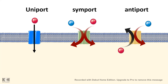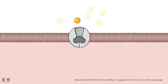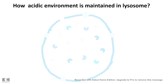For uniport, consider the example of red blood cells (RBCs). RBCs need to be metabolically active and require glucose to enter the cell. This happens via GLUT1, a transporter present in the RBC membrane — an example of facilitated diffusion. Glucose binds to the GLUT1 transporter, which undergoes a conformational change, opens toward the inside of the cell, and releases the glucose molecules to the inner side. This is how glucose transport takes place in the RBC membrane — directionality is from outside to inside, making it a uniport.